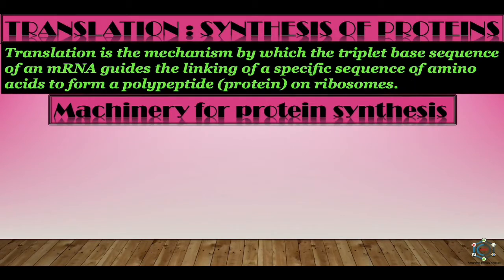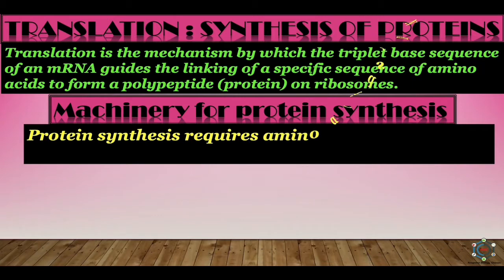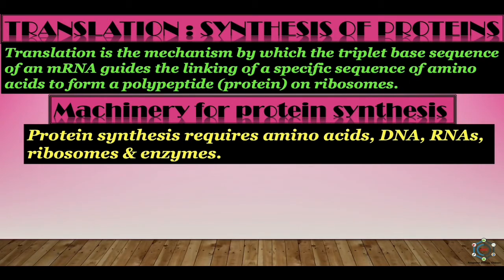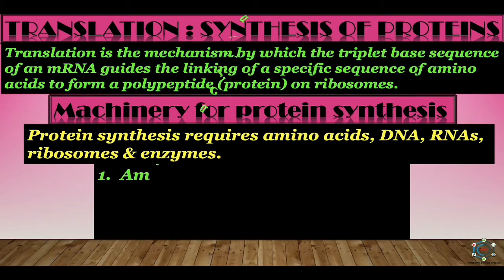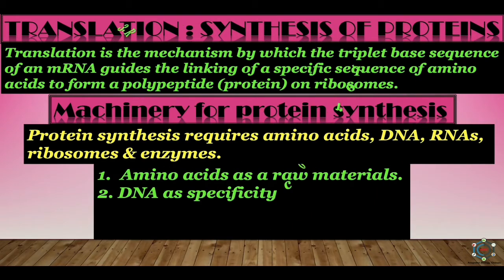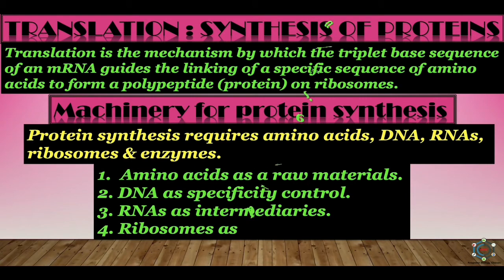The machinery for protein synthesis requires amino acids, DNA, RNAs, ribosomes and enzymes. Amino acids serve as the raw material — proteins are polymers of amino acids, and these are available in the cytoplasmic matrix as an amino acid pool.